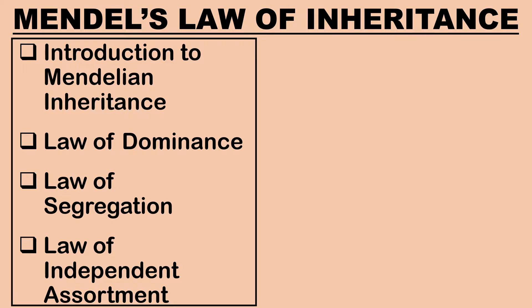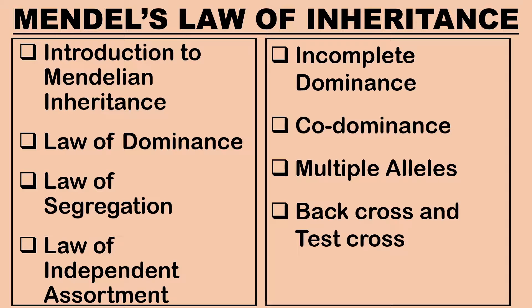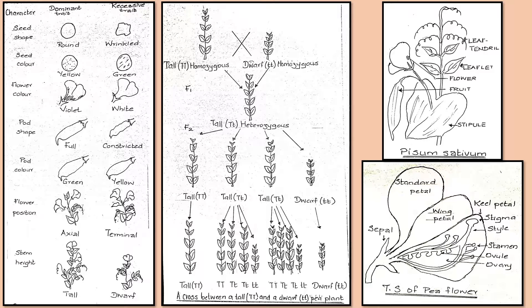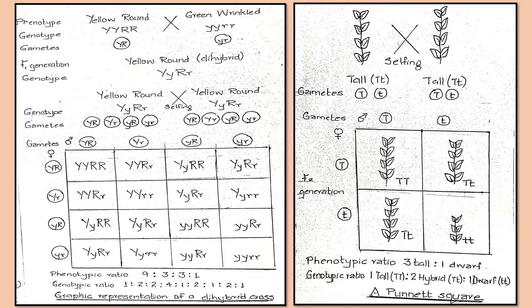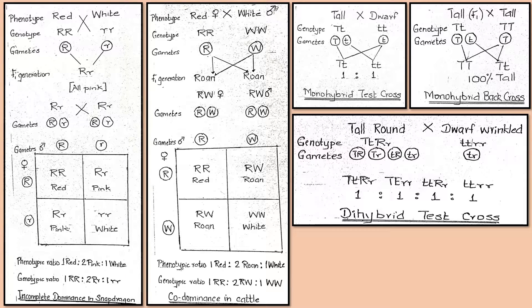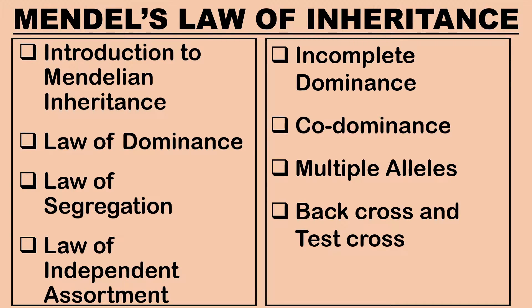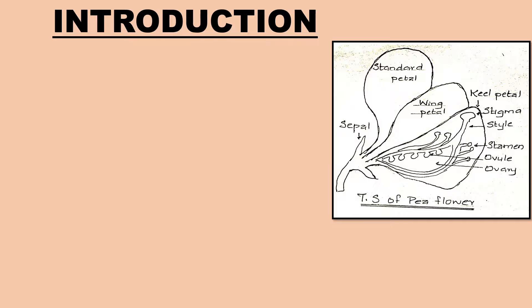Hello, in today's video we shall learn in detail about Mendel's Laws of Inheritance. By the end of this video, you'll have a clear understanding about Law of Dominance, Law of Segregation, Law of Independent Assortment, Incomplete Dominance, Co-Dominance, Multiple Alleles, Backcross and Testcross. Let us begin with the introduction to Mendelian Inheritance.